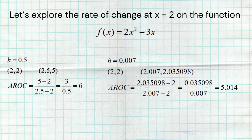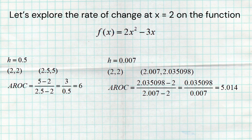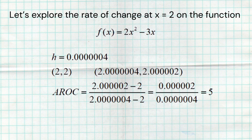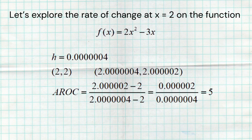Getting even closer: with h = 0.007, the second point is (2.007, 2.035098), giving an average rate of change of 5.014. And with h = 0.0000004, the average rate of change rounds to exactly 5. So the best approximation for the rate of change at x = 2 is 5. The closer we bring that second point, the better the approximation. You can't find the rate of change at a single point — you need two points, so you approximate by getting very close.